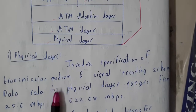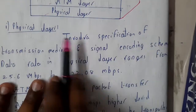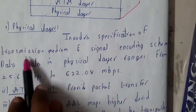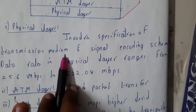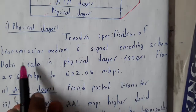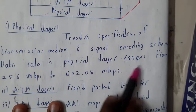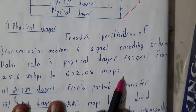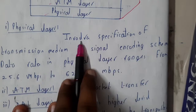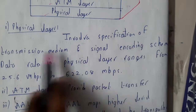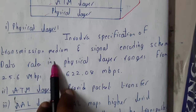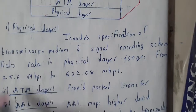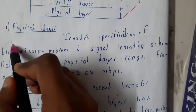The physical layer involves a specification of a transmission medium and signal encoding schema. The data rate in the physical layer ranges from 25 Mbps to 622 Mbps. It involves specification of a particular transmission medium.